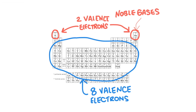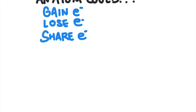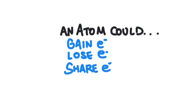There are 3 ways to get 8 valence electrons. The atom could gain electrons, lose electrons, or share electrons with another atom. Electrons aren't just lost or gained from out of nowhere — atoms are going to have to work together. If an element loses an electron, another element is going to have to gain that electron. This is what we call a chemical reaction. Chemical reactions form compounds.